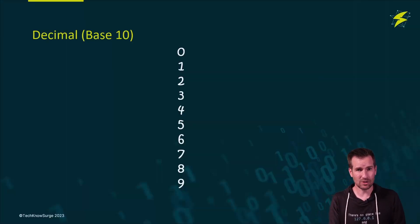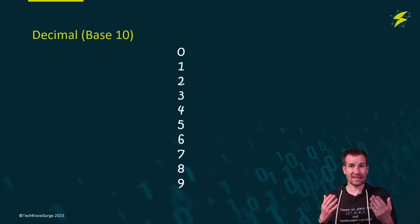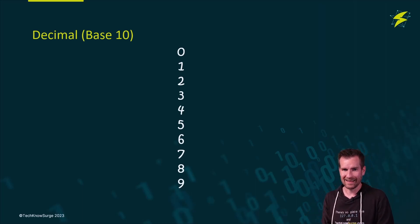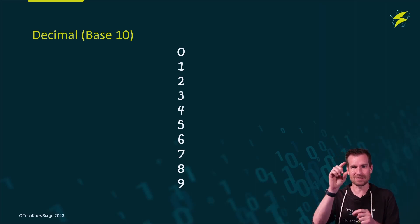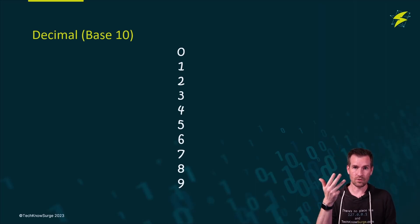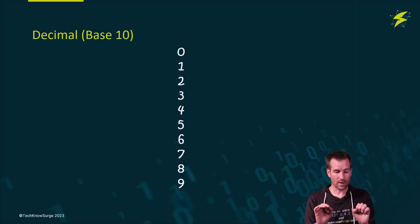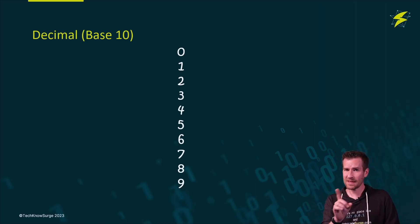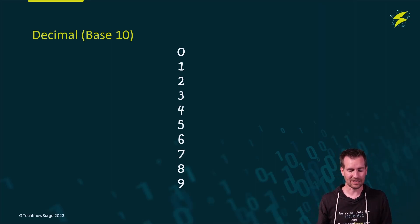Then we have the decimal system, the one you're probably most familiar with and use on a day-to-day basis. We also call it the base 10 system because there are 10 digits: 0 through 9. Zero is a placeholder in the decimal system. So 0, 1, 2, 3, 4, 5, 6, 7, 8, 9 gives us 10 digits. That's going to be important when we get into binary numbers, because we're going to have to understand that 0 is our first digit.